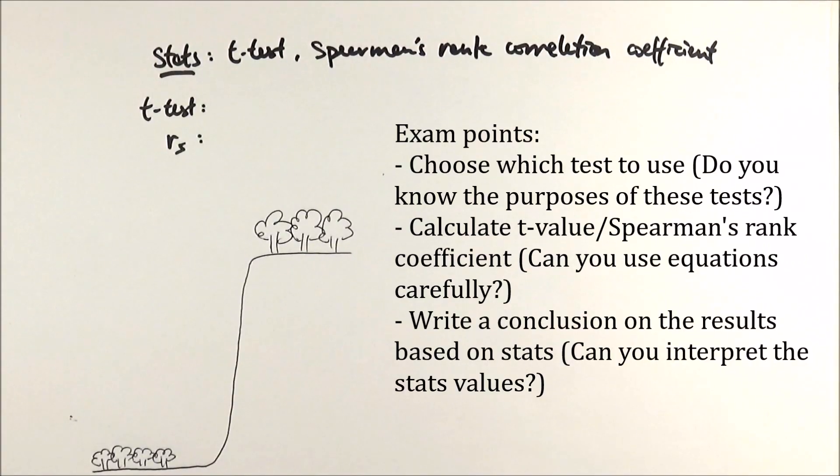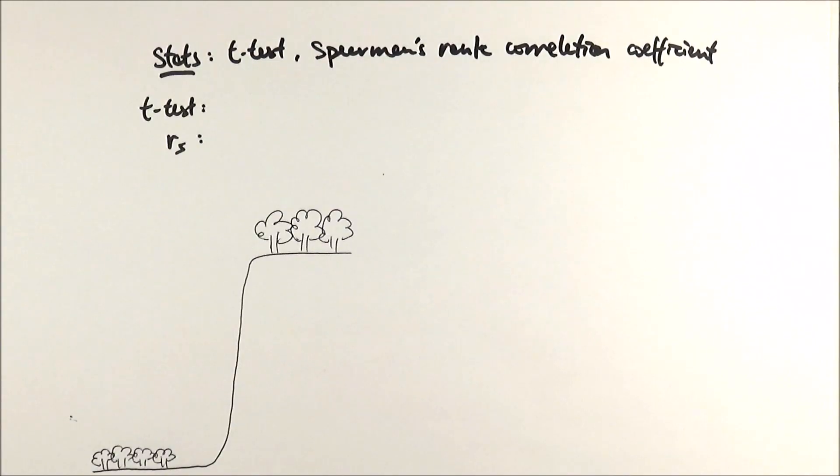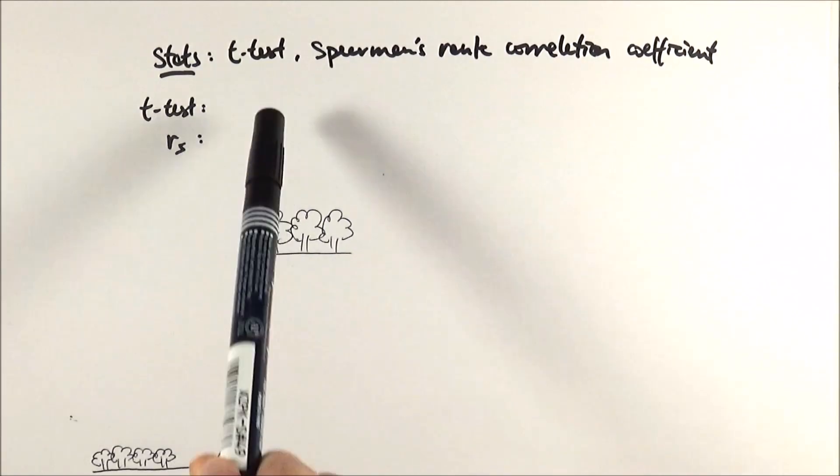In an exam they might give you a set of data or two sets of data and ask you which test do you need to do to prove something, and you need to pick the right one. Or they might tell you which test to do, give you the equations, and then you do the test and give a conclusion. Here I'll be looking at t-test and Spearman's rank correlation coefficient, which are the commonly asked ones, especially t-test.